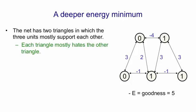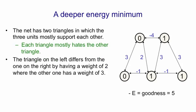If you look at that net, you can see the net's composed of these two triangles in which the units mostly support each other, although there's a bit of disagreement at the bottom. And each of those triangles mostly hates the other triangle via that connection at the top. The triangle on the left differs from the one on the right by having a weight of two where the other one has a weight of three so the triangle on the right will give you the deepest minimum.